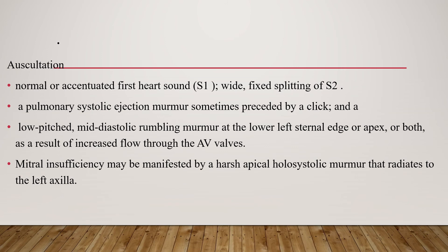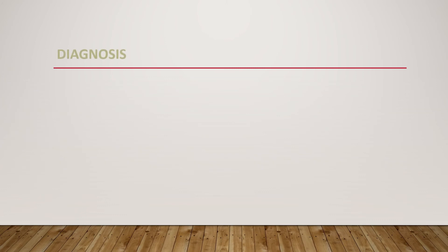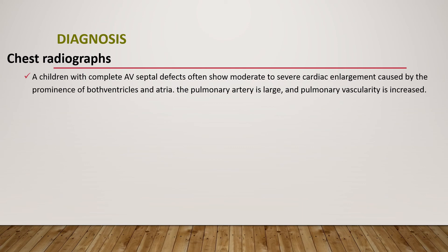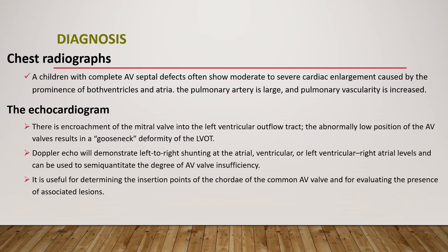Mitral insufficiency might be manifested by a harsh apical systolic murmur with radiation to the left axilla. On chest X-ray, complete AV septal defect may show moderate to severe cardiac enlargement caused by prominence of both ventricles and atria, with a large pulmonary artery and increased pulmonary vascularity. Echocardiography is the important imaging modality, showing encroachment of the mitral valve into the left ventricular outflow tract and an abnormally low position of the AV valve, resulting in a gooseneck deformity of the left ventricular outflow tract. Doppler echo demonstrates left-to-right shunting at the atrial, ventricular, or left ventricular–right atrial levels and can semi-quantify the degree of AV valve regurgitation.